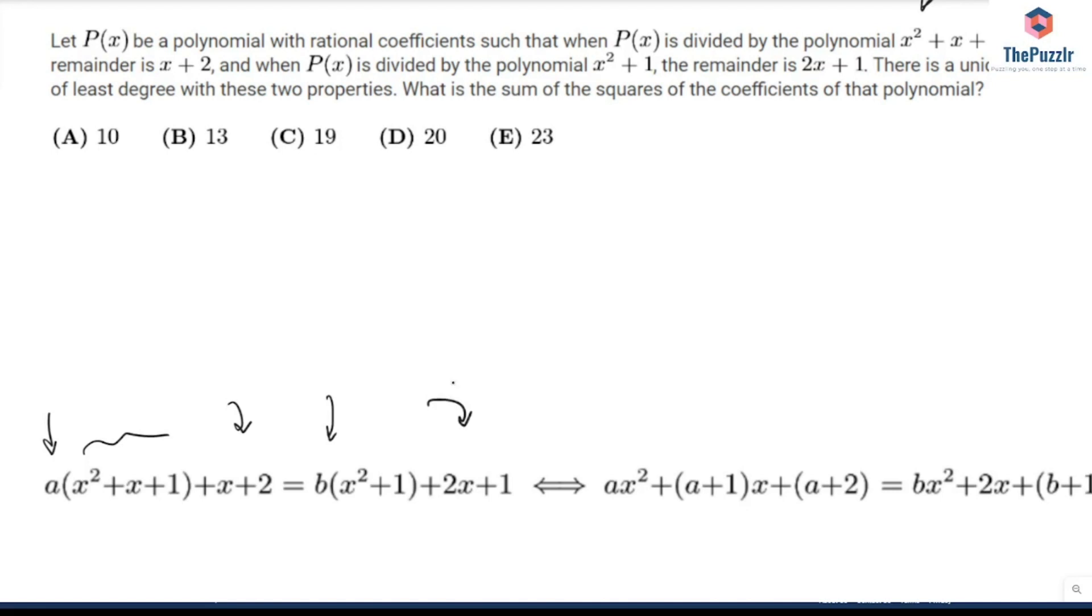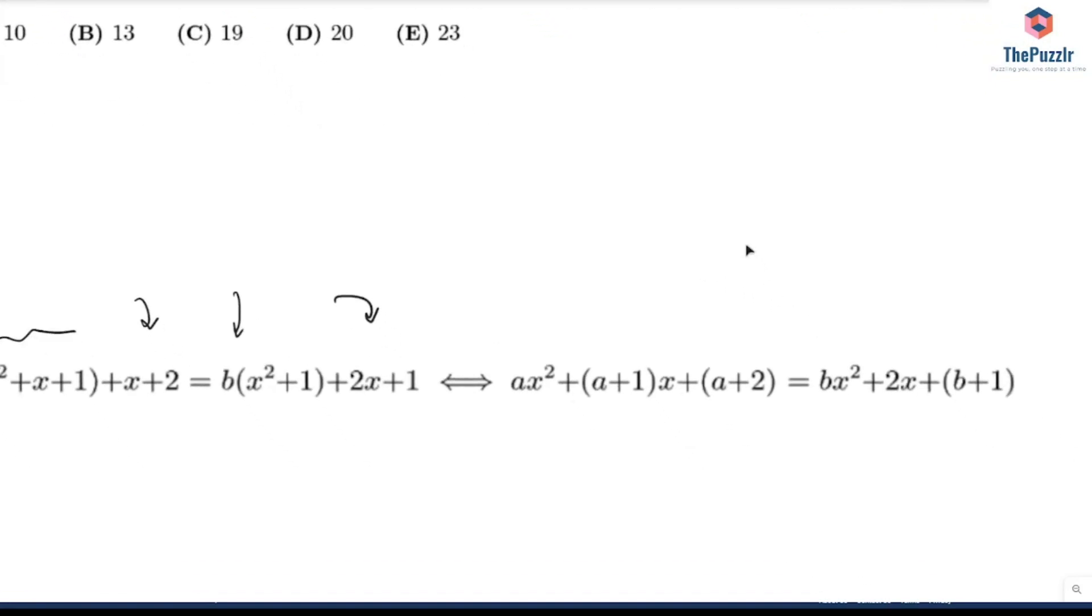Now we can match the coefficients. When we do this, we get that a equals b, a + 1 equals 2. So far so good. So this would tell us that a equals 1, and this would then tell us that b equals 1.